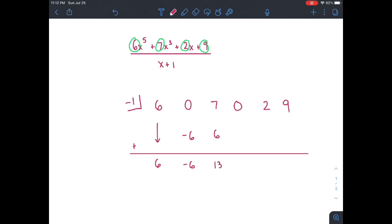Now we do 13 times negative 1. That gives us negative 13. 0 plus negative 13 is just negative 13. Negative 13 times negative 1 is 13. And we add 2 and 13 and we get 15. 15 times negative 1 is negative 15. And we add negative 15 and 9 to get negative 6.